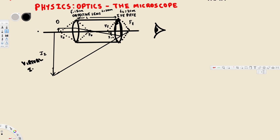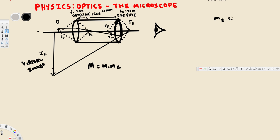To find the magnification of this new image, since we have two lenses we use the equation M equals M1 times M2, where M2 is the eyepiece lens. The eyepiece acts like a magnifying glass.